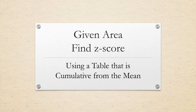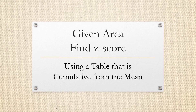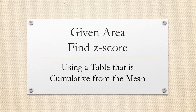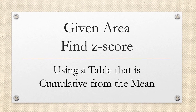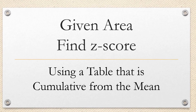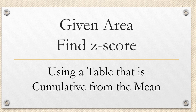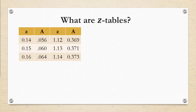Hi, I'm Ms. Hearn. Let's get started. In this video, we're going to be given the area under a standard normal curve and find the z-score associated with it. The type of z-table that we're going to use is one that's cumulative from the mean.